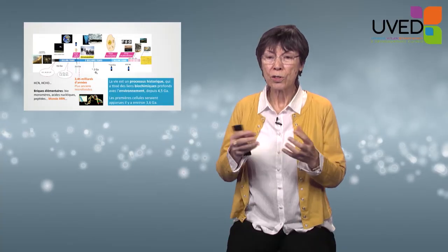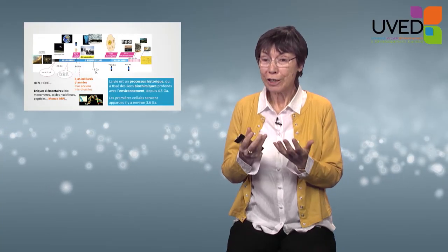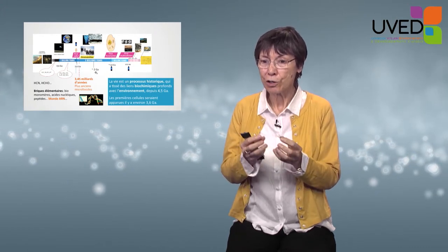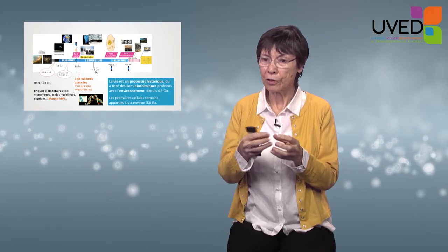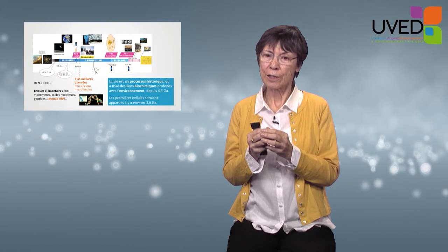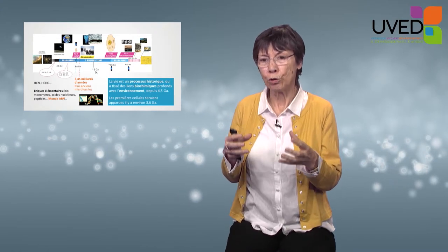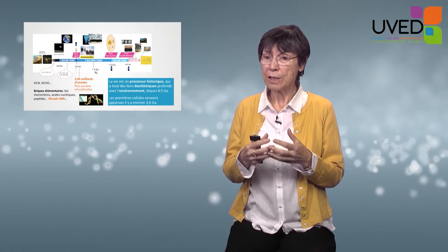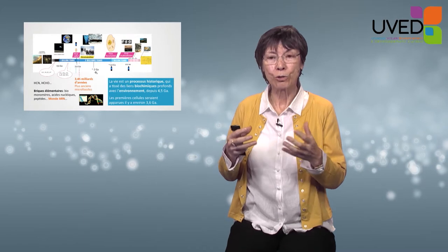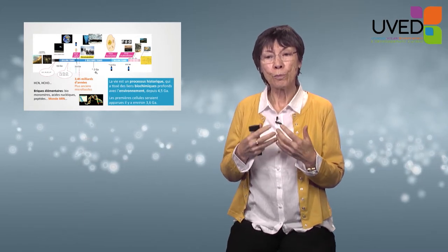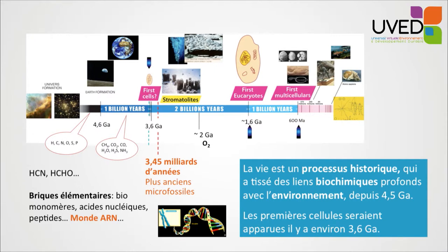Traces were found in stromatolites 3.4 billion years ago, and the very early cellular forms then grew and became bigger. There was a fantastic event in evolution called endosymbiosis — the combination within a bigger compartment of smaller elementary compartments from different cellular forms of life. For the first more sophisticated eukaryote cells to appear, it took 2 billion years. Then eukaryote cells learned to live together and assembled to form multicellular organisms. We are multicellular organisms — 10 to the power of 14 cells to make a human being — and it took an additional 1 billion years.